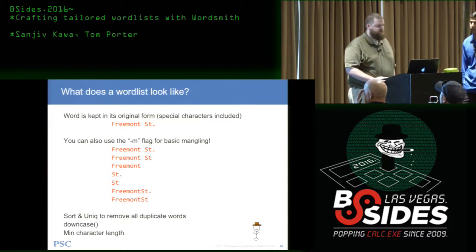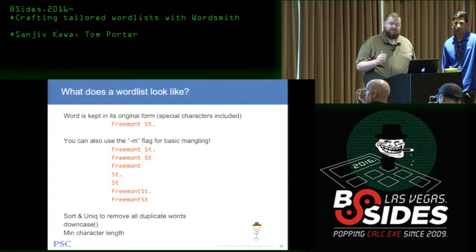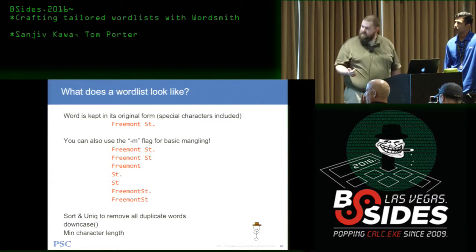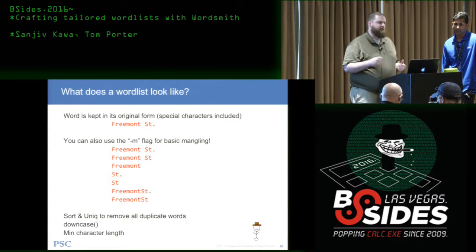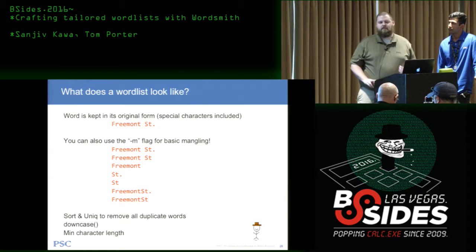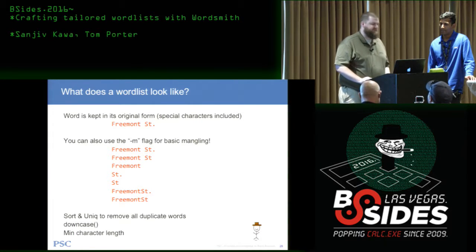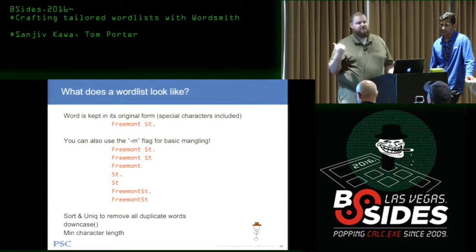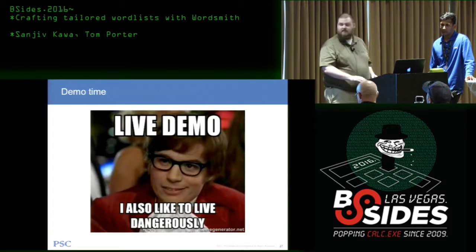A word list generated by WordSmith looks like this — using Fremont Street from Nevada as an example. The word comes out with a capital F, a space, and a period at the end. We add basic mangling: we split on spaces to break Fremont and Street into two separate words, remove special characters, remove spaces, and there's an option to convert all words to lowercase. You can also specify a minimum character length — if you've compromised a domain with a minimum password length of eight, use the minimum-length flag and it will truncate all words shorter than eight characters.